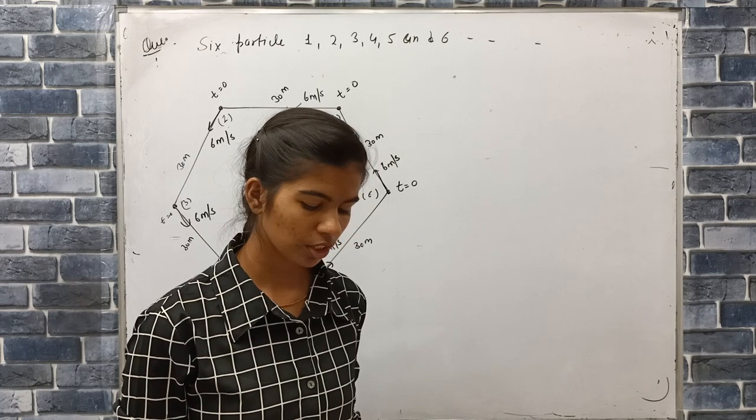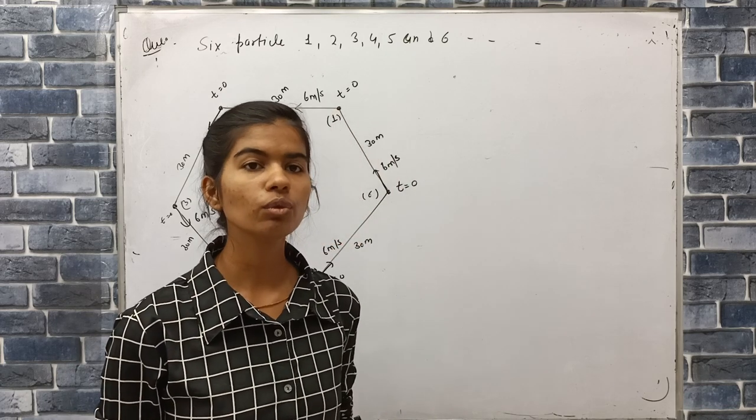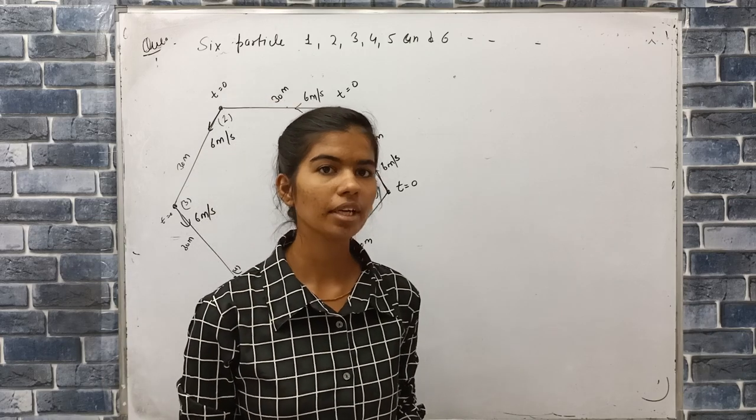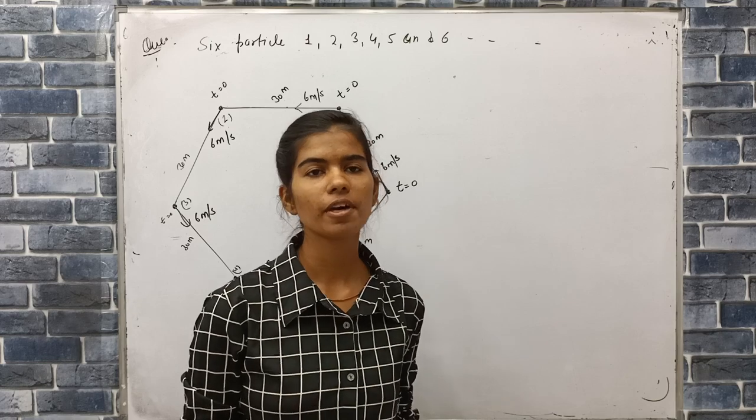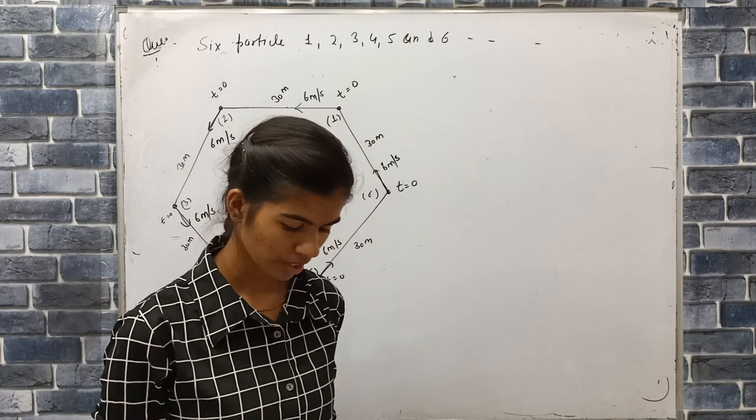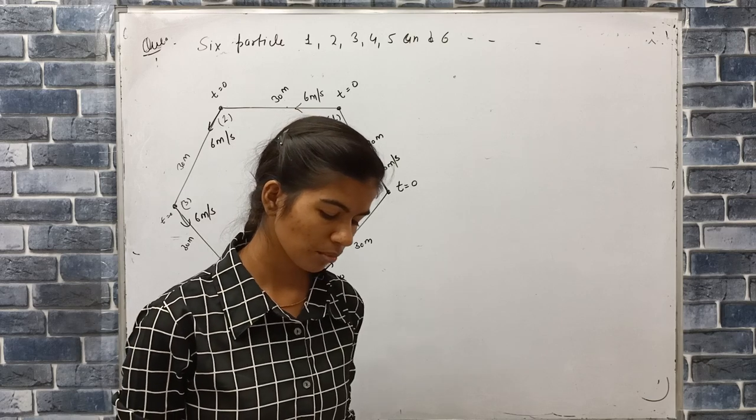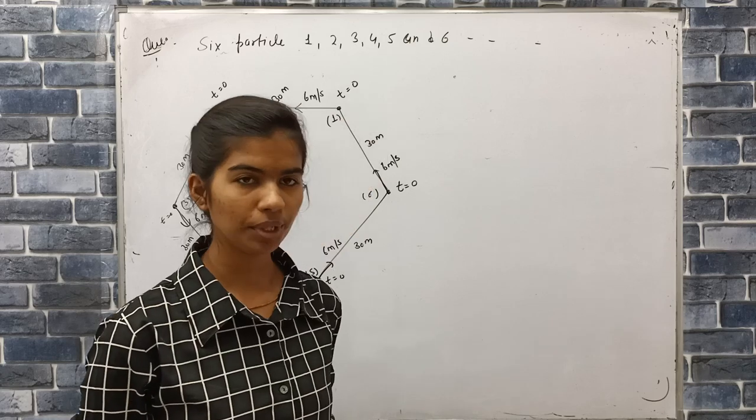Particle 1 chase particle 2 with constant speed 6 meter per second. Similarly, particle 2 chase particle 3 and particle 3 chase particle 4 and particle 4 chase particle 5 and particle 5 chase particle 6 and 6 chase particle 1. With the same constant speed 6 meter per second. After what time do they meet?